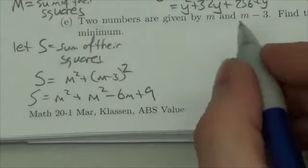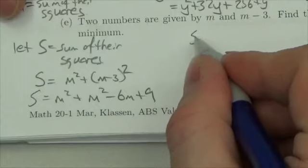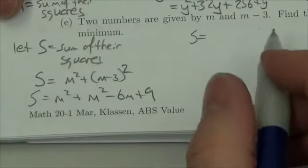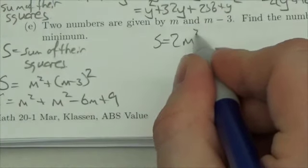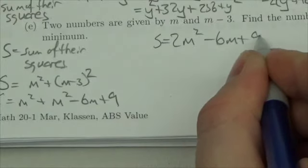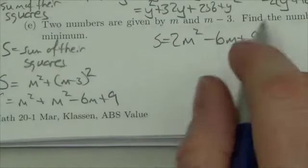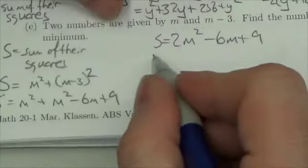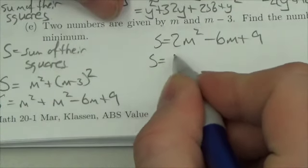Anyway, let's continue going on here with completing the square. So I'm just going to simplify that expression there, that is 2m squared minus 6m plus 9. So to complete the square I'm going to ignore the 9, move that out of the way, and factor out the leading coefficient from the quadratic and linear terms.